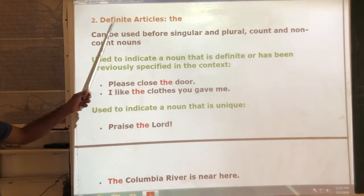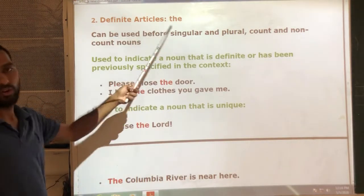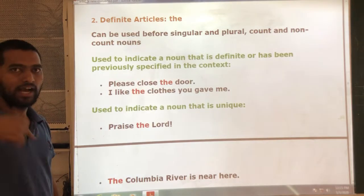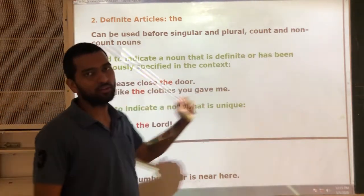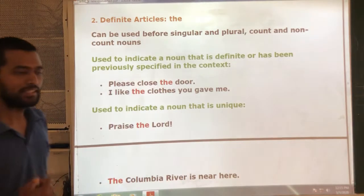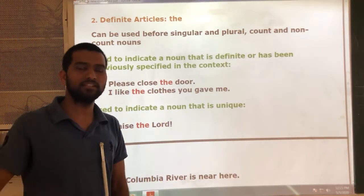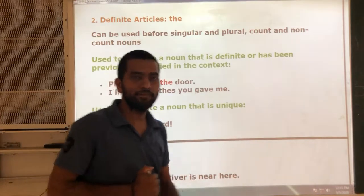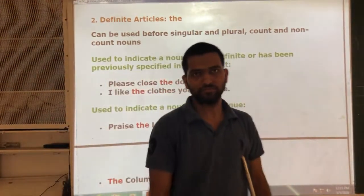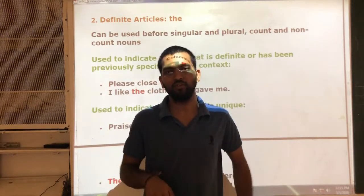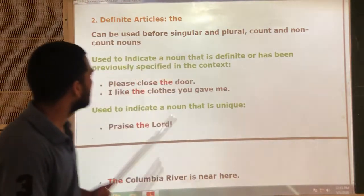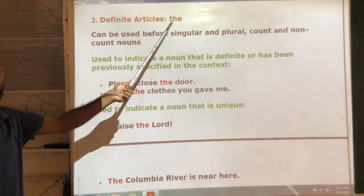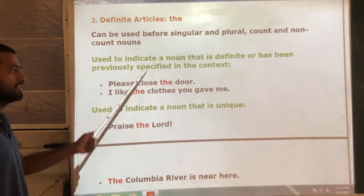Now let us discuss the definite article. The definite article is 'the'. The can be used before singular and plural nouns — both countable and non-countable. Countable nouns are those which can be counted, like two pens, three pencils, or five articles. Non-countable nouns are those which cannot be counted — for example, water cannot be counted. There are many rules for the definite article 'the', so concentrate and listen.